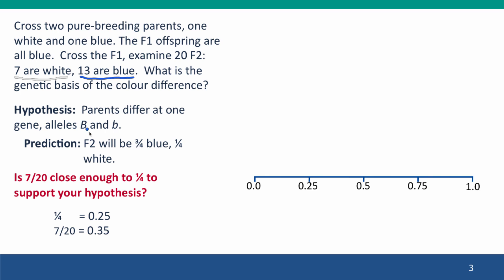We hypothesize that the parents, the original parents, were homozygous for big B and little b alleles, respectively, that big B specifies blue, little b white, and we predict that the F2 will be three-quarters blue, one-quarter white. That's what the hypothesis predicts.